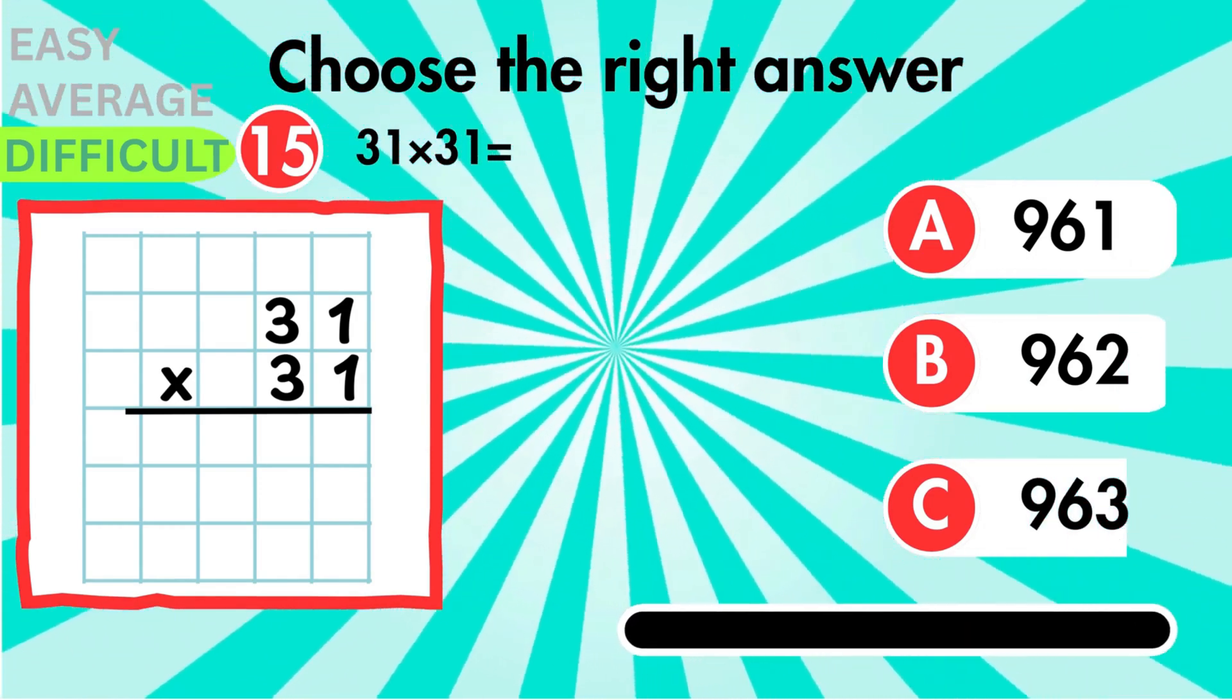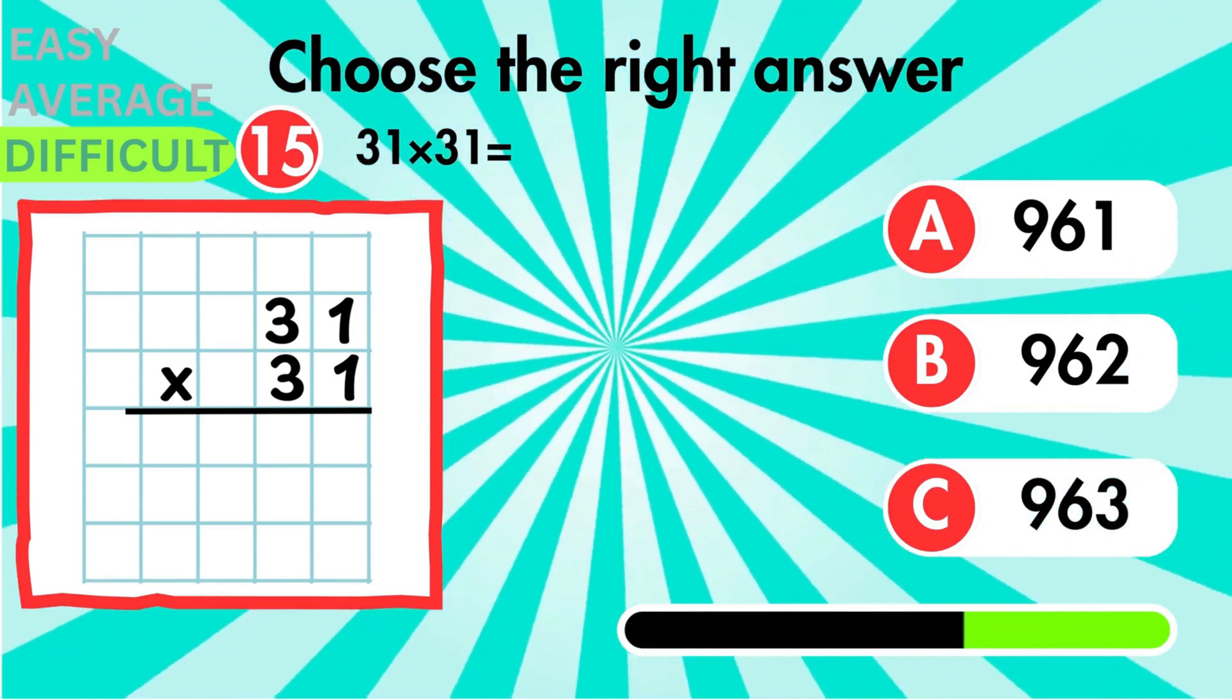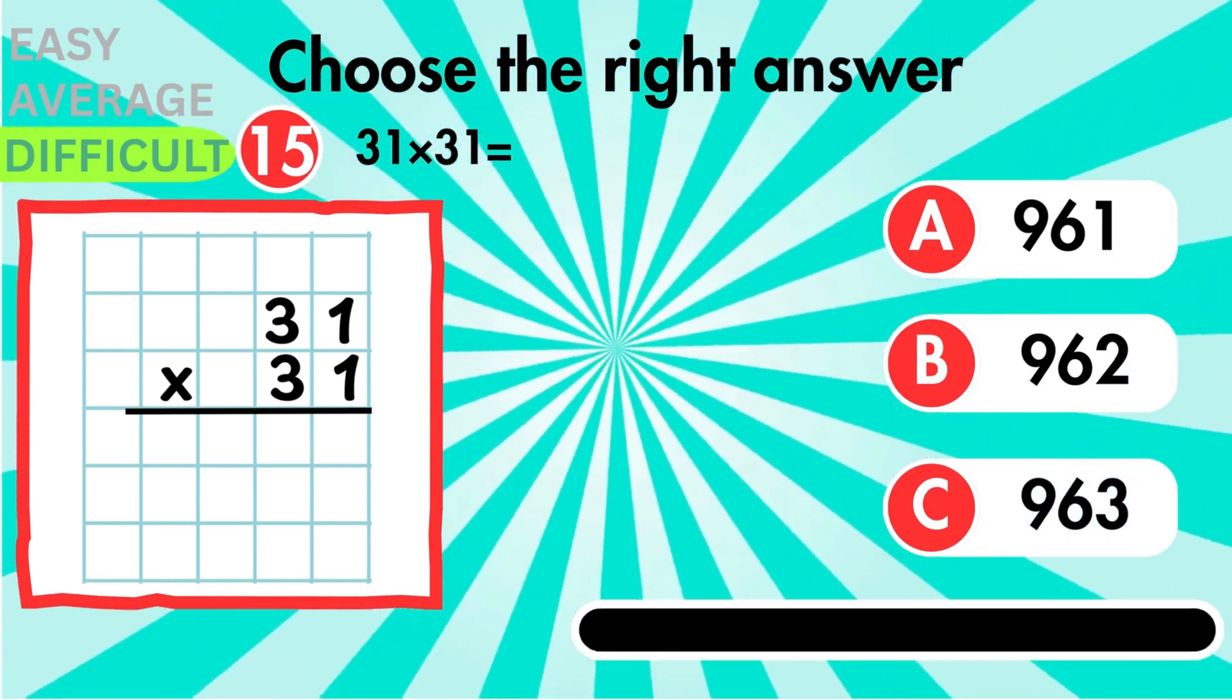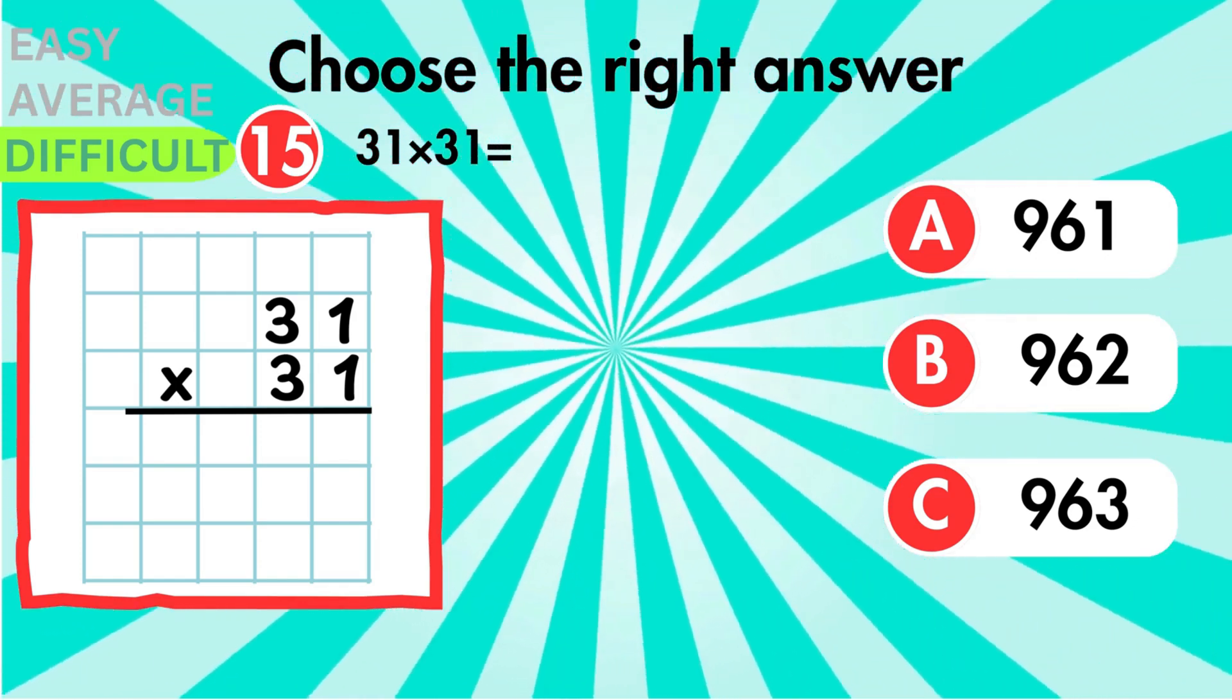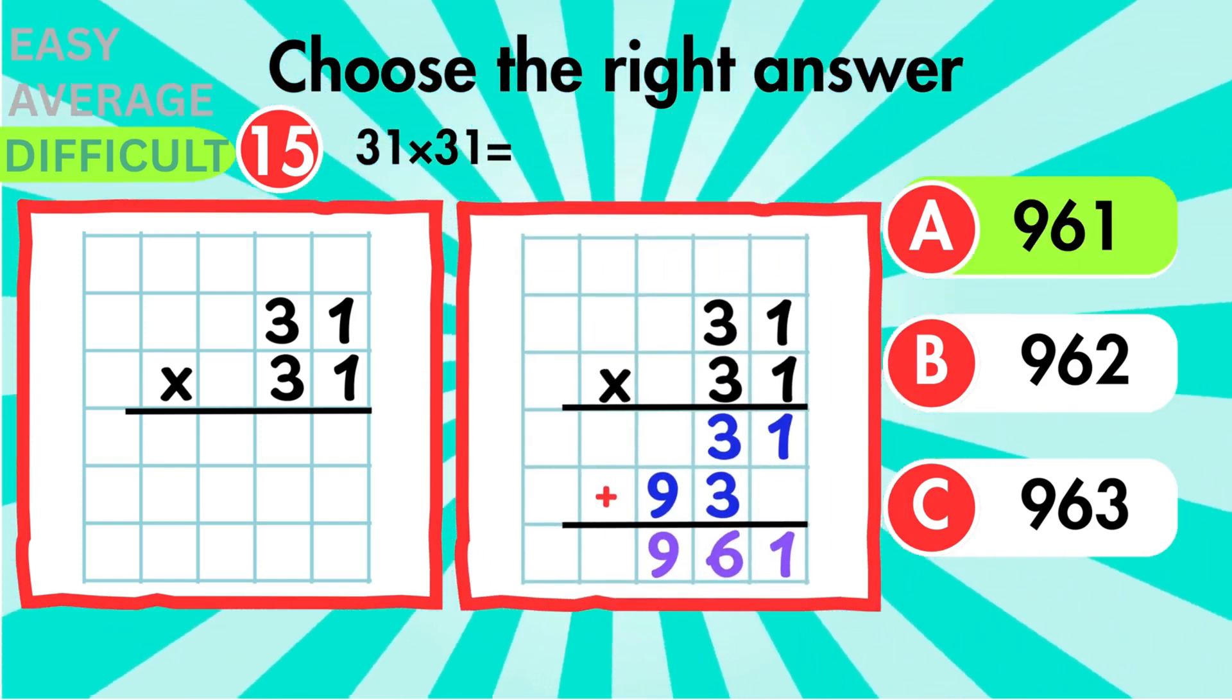Our final problem is 31 times 31. This involves careful addition of both rows. That gives us 961.